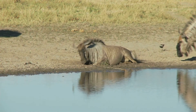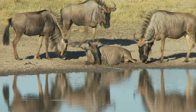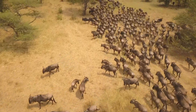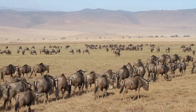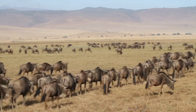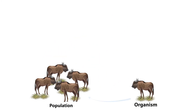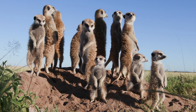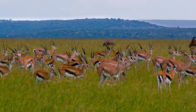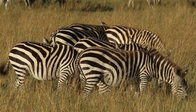Of course, there's more than just one wildebeest in an African grassland. All of the organisms of the same kind within an ecosystem are called a population. All of the wildebeests in the African grassland make up a population. Organisms within a population interact with one another and reproduce. They have young to ensure their kind continues to live in the ecosystem.